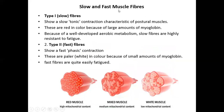Let's see the classification of muscle fibers. There are three types: slow, fast, and intermediate fibers, which are called red, white, and mixed muscle respectively.